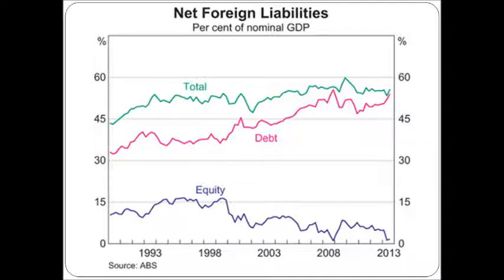Traditionally, and to this day, most of it is debt. So most net foreign liabilities in Australia are debt. And debt has been growing over this period. In the 90s, equity grew quite a bit. But then it started falling. In recent years, it started to pick up a little bit more.